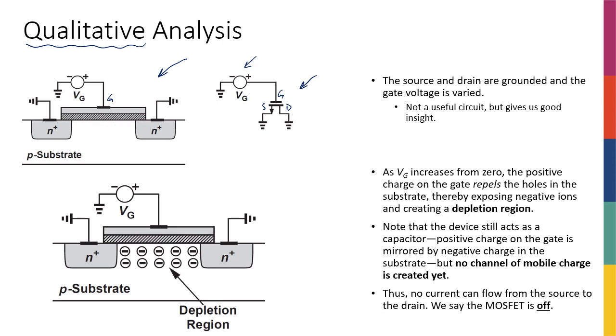What really happens is that, because this is a P-type substrate, it's full of free holes. It's a P-type semiconductor, so it has a lot more holes than electrons.